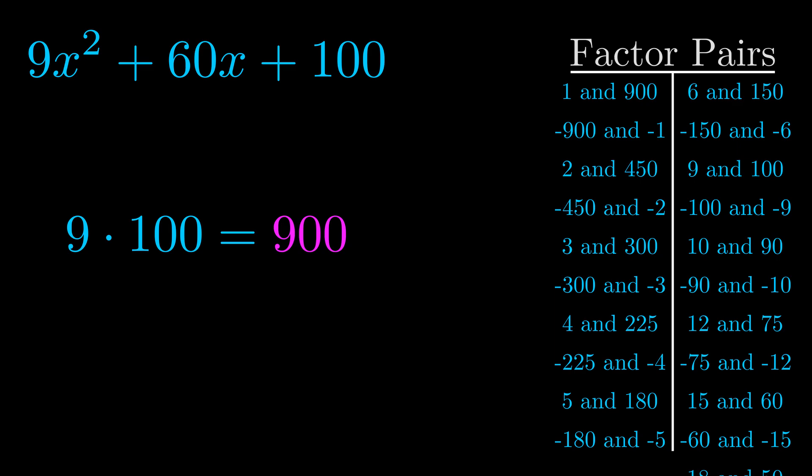The b value is the coefficient on the x term. That's the middle term, the one that we haven't done anything with yet. And really this is the only factor pair that we need.